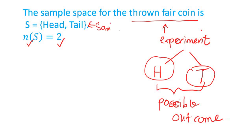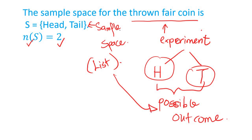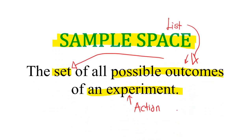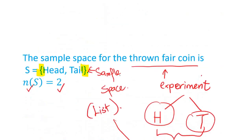These two different outcomes I list out in a set — so this is the sample space. That's why I said the sample space is the list of possible outcomes, and we write it in set notation. Because the definition of sample space is a set — remember, the sample space is a set.